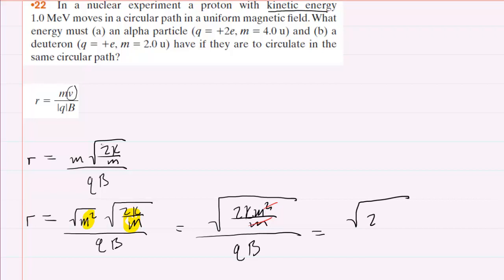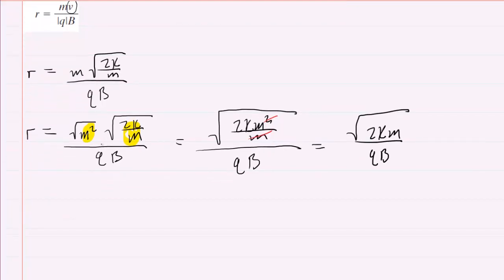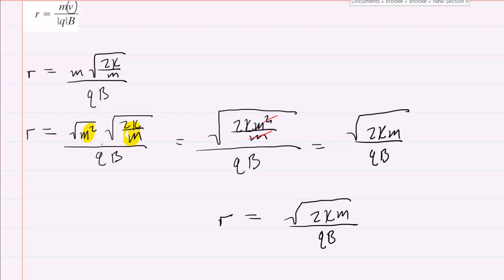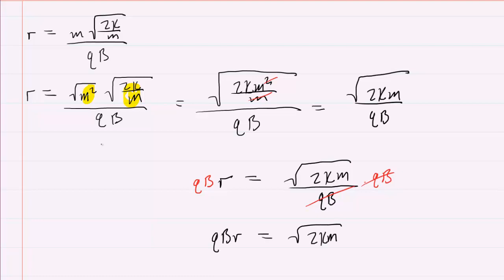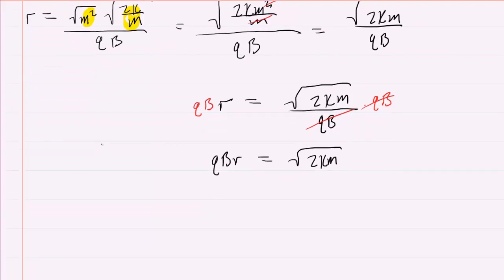So now we're finally left with the square root of 2Km over qB. This gives us the radius expressed in terms of the kinetic energy. It will be useful to manipulate this equation a little further — we'll multiply both sides by qB, which cancels it on the right-hand side. So now we have qBr = √(2Km). Then we square both sides: q²B²r² = 2Km.